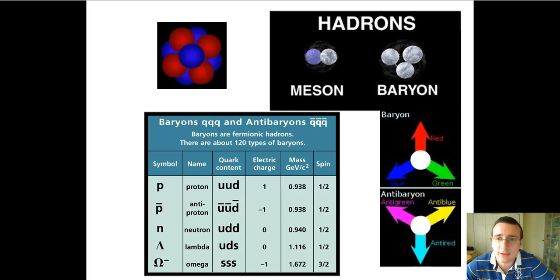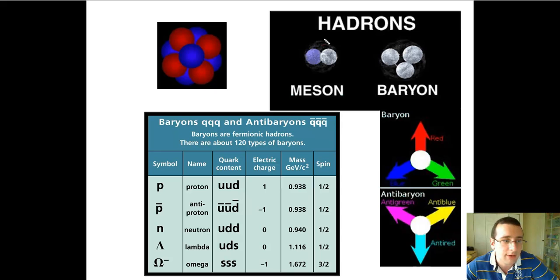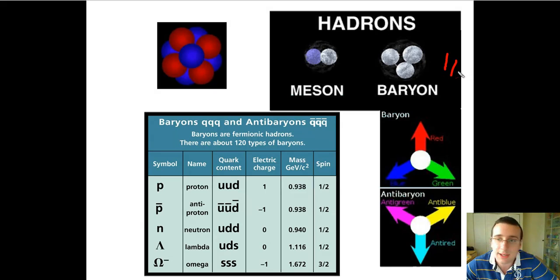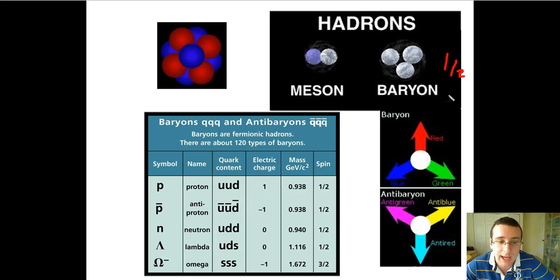The biggest difference between the two main kinds of hadrons is going to be the number of quarks that make them up. The baryons — all baryons — have three quarks, and all mesons have two quarks. Some scientists say that there are baryons out there with five or seven quarks, but it's always going to be an odd number, which is what gives them a half spin, just like the fermions. The baryons all have half spins, or multiples of half spins, like three-halves or five-halves.